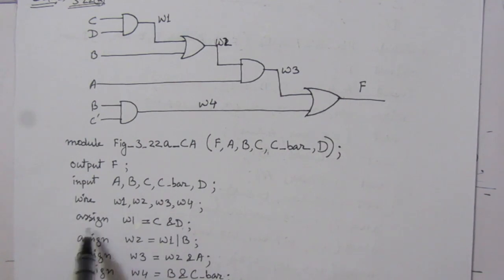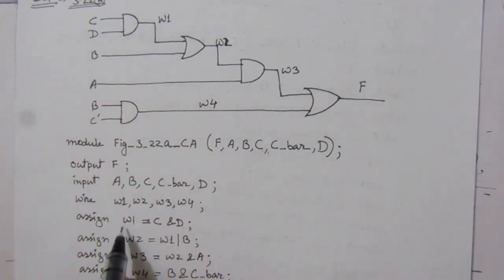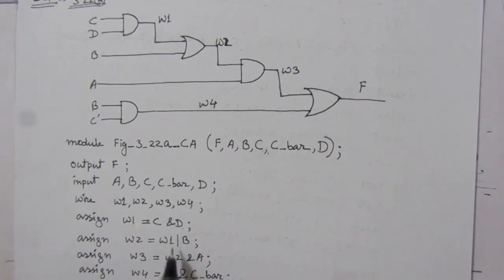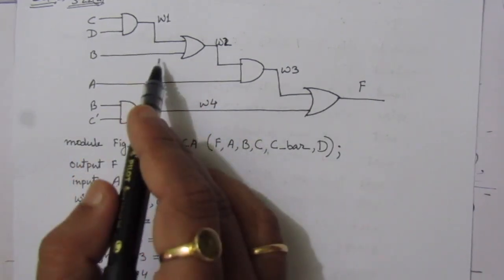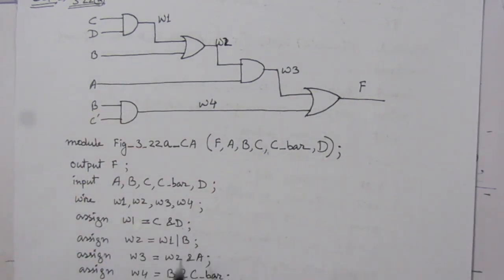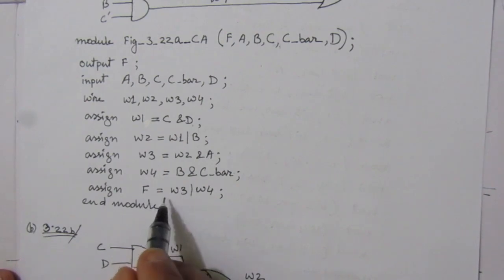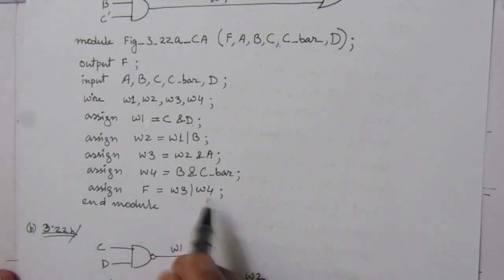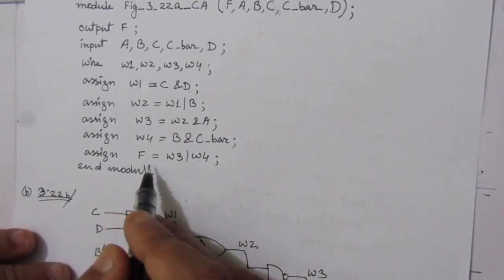We use the assign statement. W1 equals C AND D — this is the AND operator. W2 equals W1 OR B — this is the OR operator. Similarly, we find out W3 and W4. Finally, the output function F equals W3 OR W4. Then we write the endmodule.